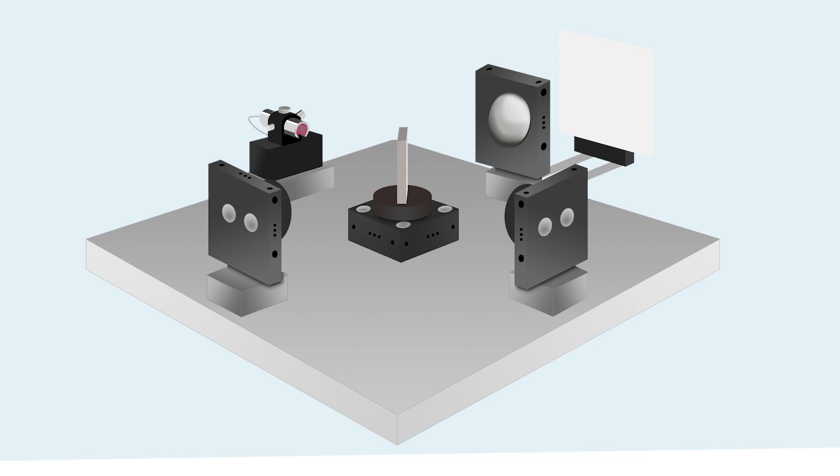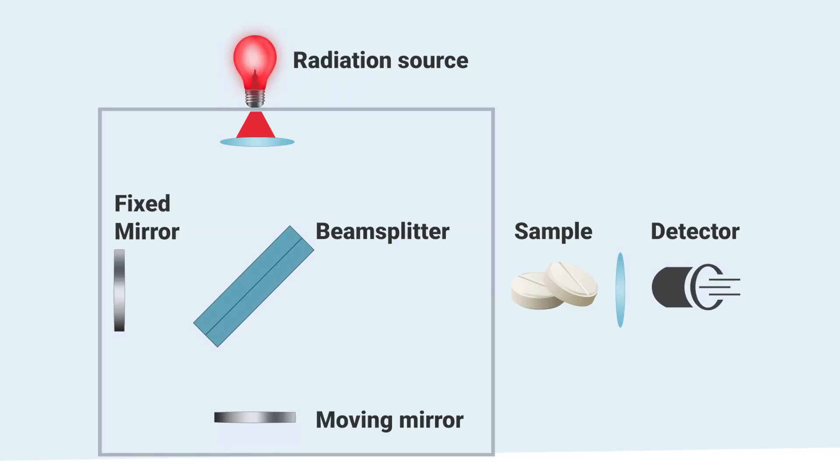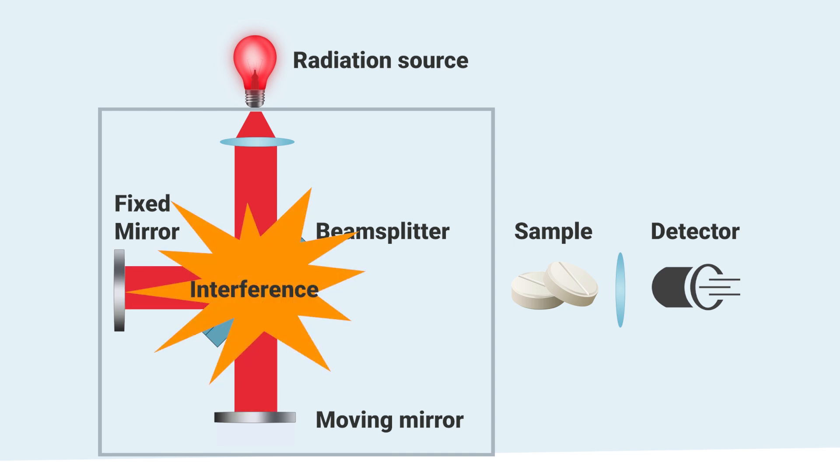This is a so-called Michelson interferometer. Here, the IR beam enters the interferometer and is directed at a beam splitter, which splits the beam into two separate beams. One of these beams is directed at a fixed mirror, the other at a movable mirror. When the light travels back and is recombined, this causes interference.